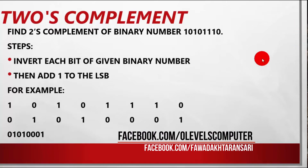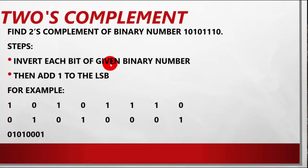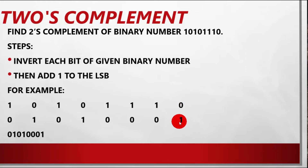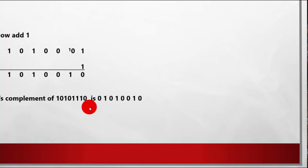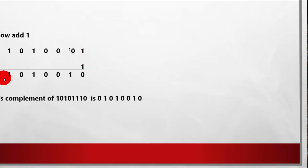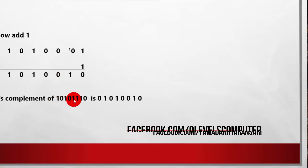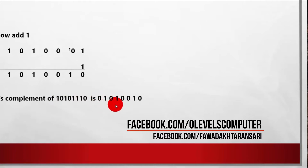The next topic is the 2's complement of a binary number. For example: 1010 1110. The first step is to invert all bits — every 0 becomes 1 and every 1 becomes 0. So you get 0101 0001. Then you add 1 to this result. The final value is the 2's complement. So the question was 1010 1110, and its 2's complement is 0101 0010.